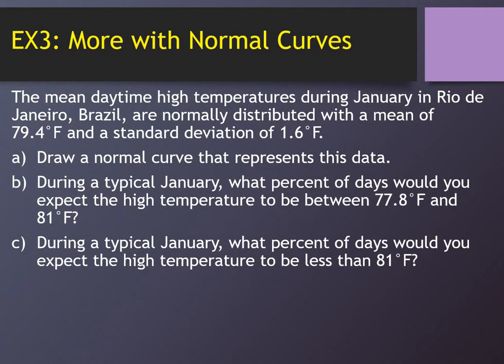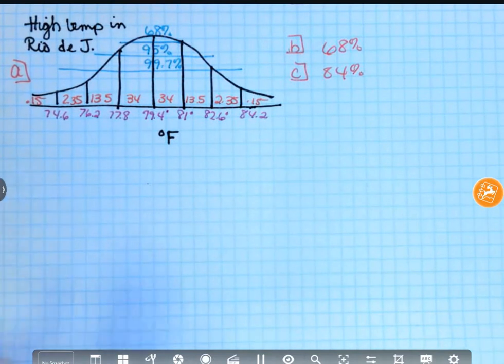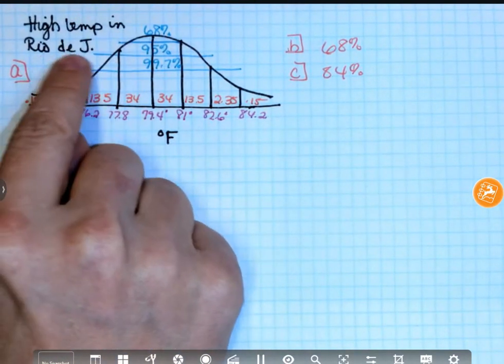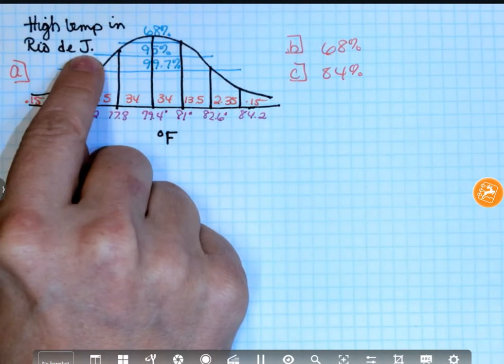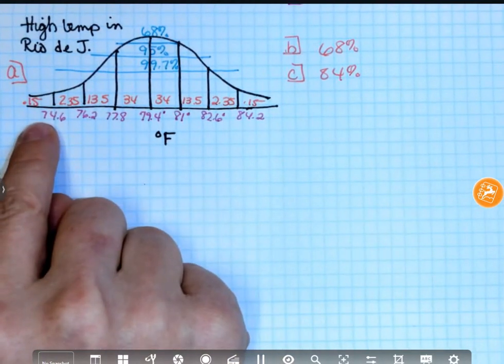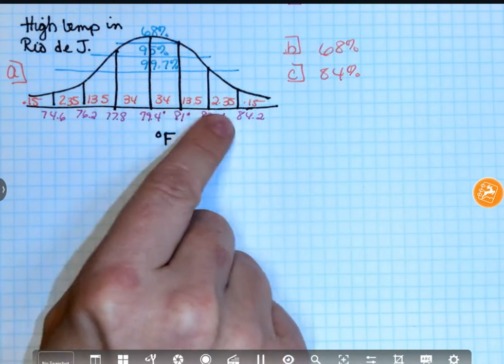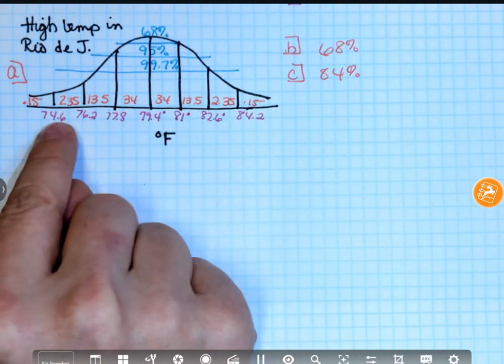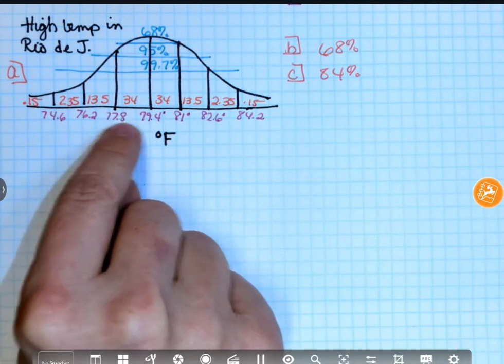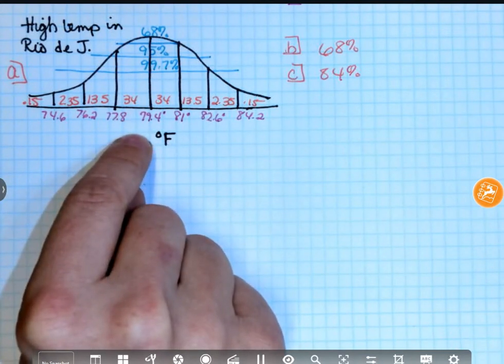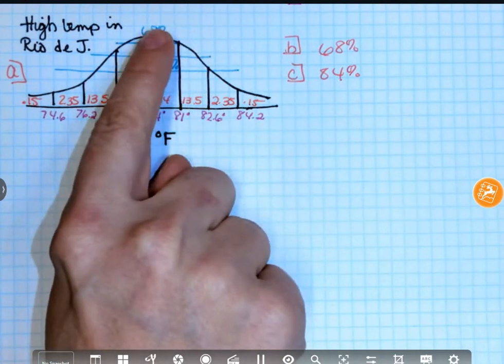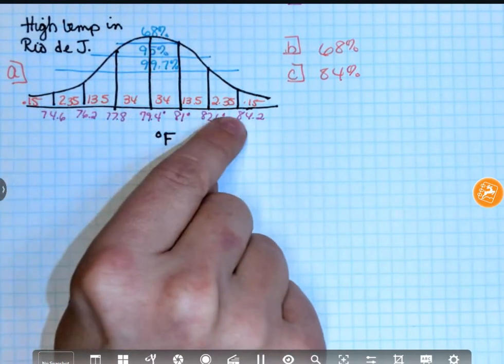The next problem dealt with Rio de Janeiro. So again, when you're working these problems, I want you to start by drawing your normal curve. Put high temp in Rio de J, because I was running out of room. Be a good idea. I don't care if you write the degrees Fahrenheit here, because I was getting tired of writing the degrees up there. But somehow you need to tell me that these measurements are degrees Fahrenheit. Again, mean, standard deviation, and then you're going to put your empirical rule breakdowns.